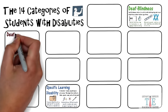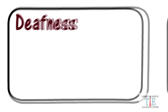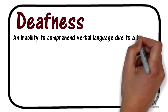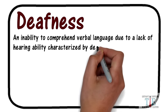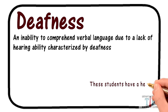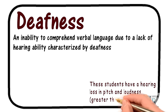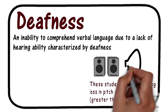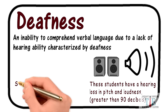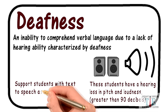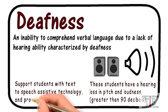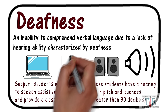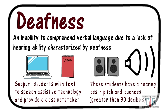Fourth on the board: deafness. It is defined as an inability to comprehend verbal language due to a lack of hearing ability characterized by deafness. These children have a hearing loss in pitch and loudness greater than 90 decibels. These students are unable to fully hear even with amplification, meaning even hearing aids do not really help. Teachers should support students with text-to-speech technology and provide a classroom note-taker. Some types of assistive technology can be very expensive and high-end, as providing notes can be done by other students.